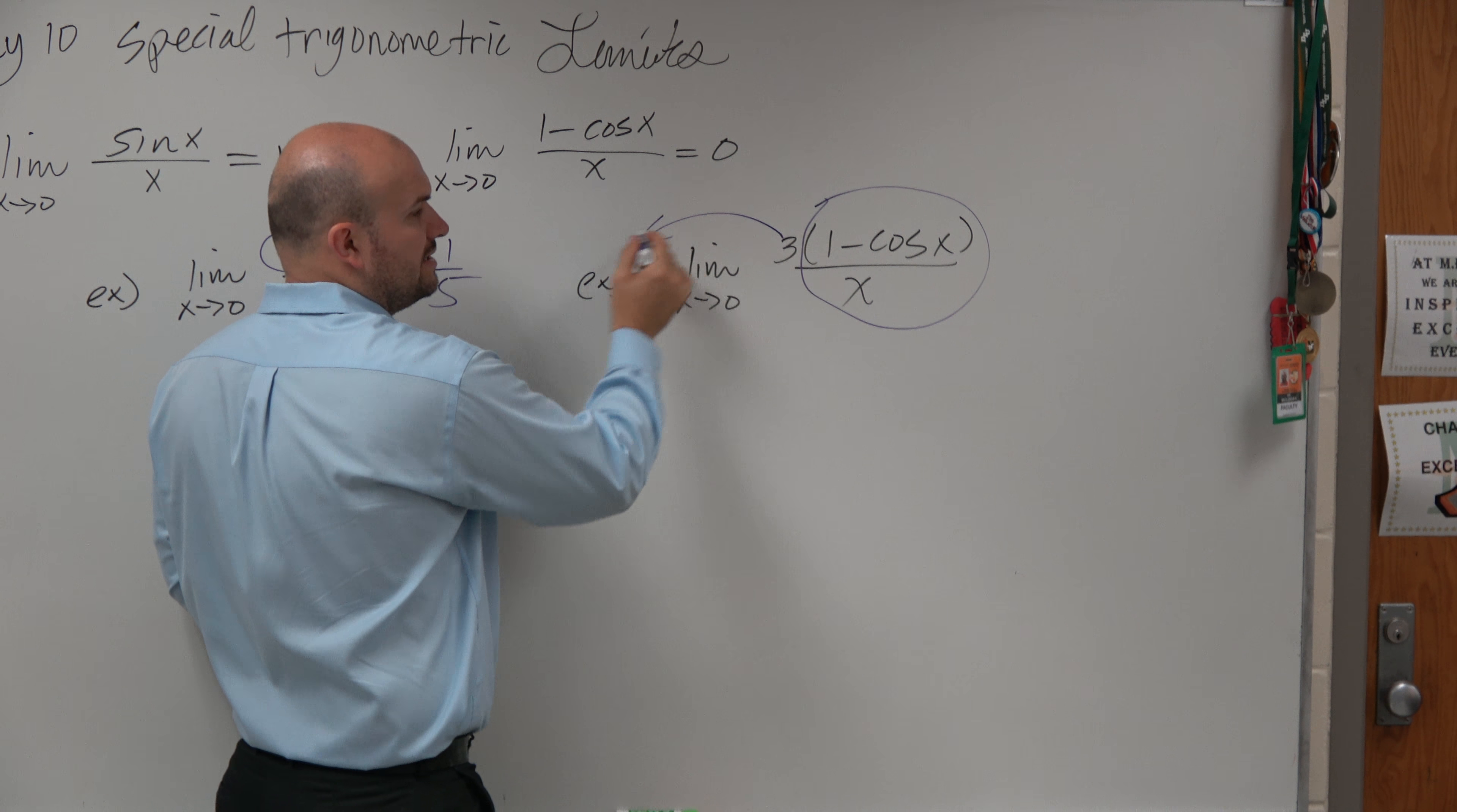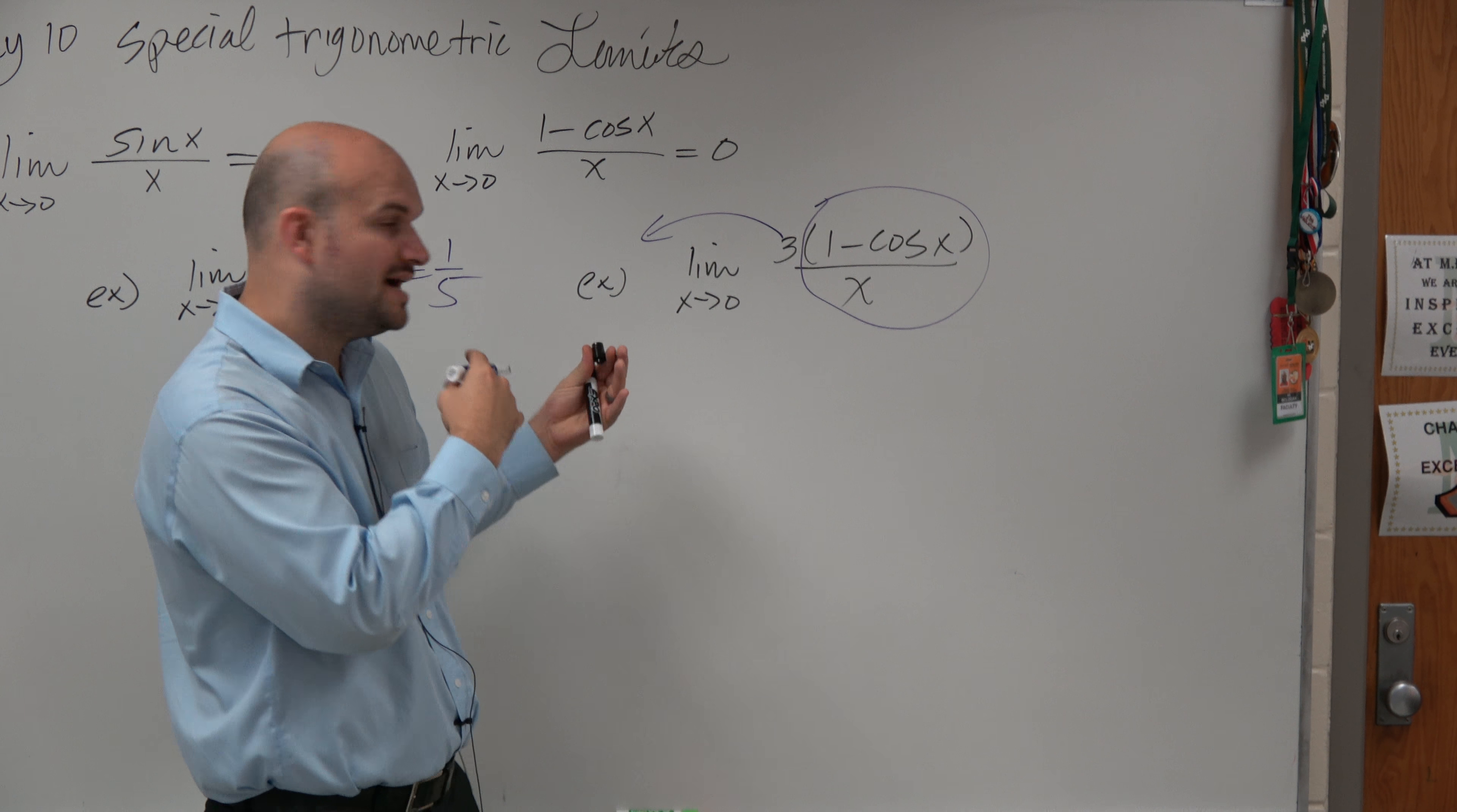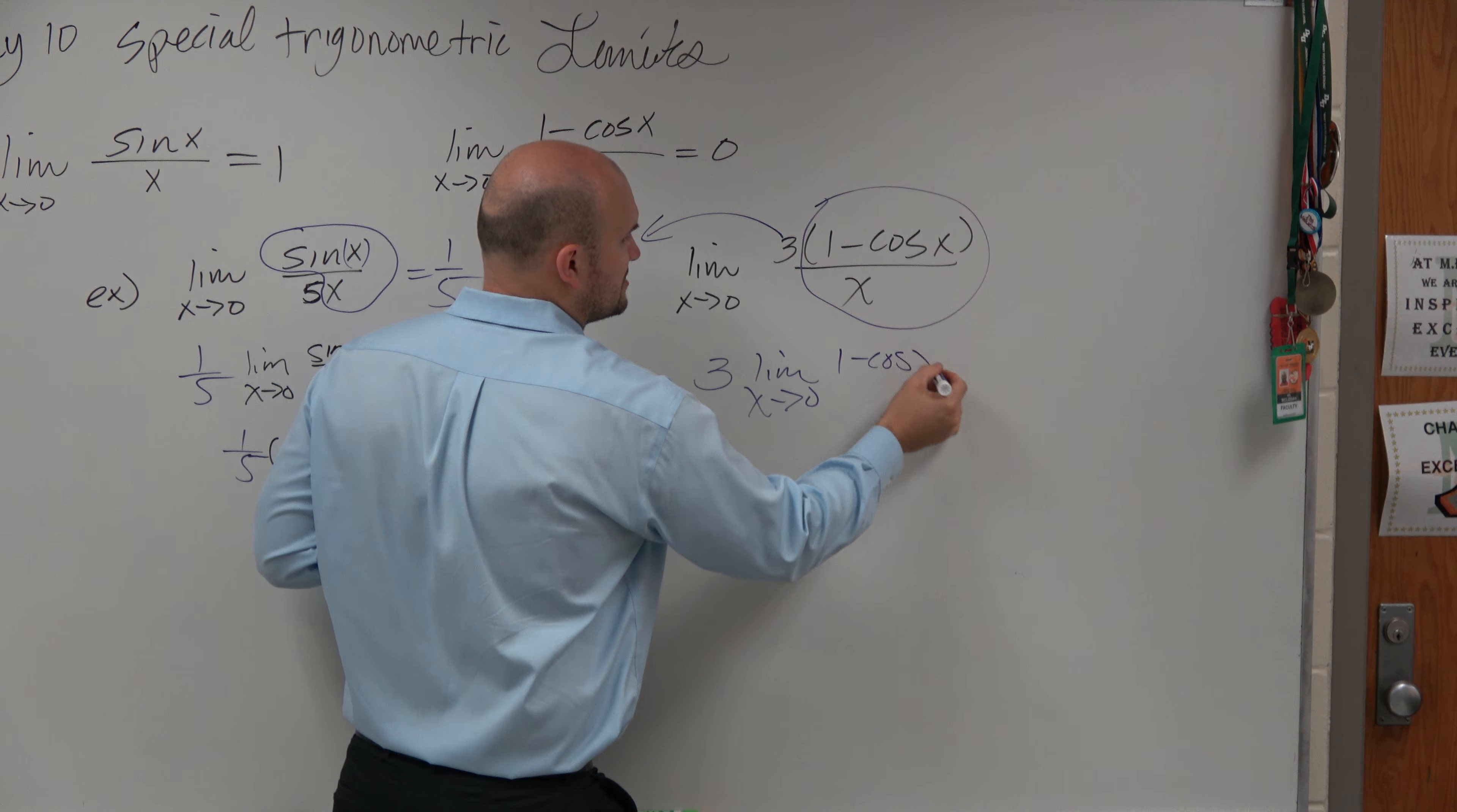We just want to take the 3 outside the limit. And we can, by the properties of limits, which we went over, you can take out a constant. So basically, we just have the limit as x approaches 0 of 1 minus cosine of x over x.